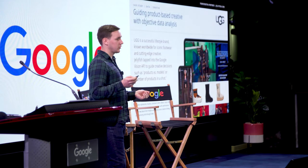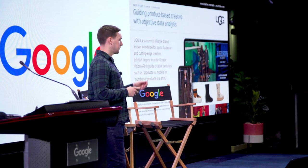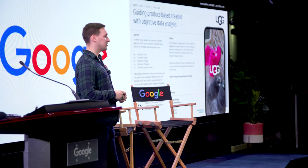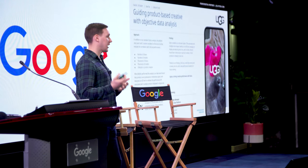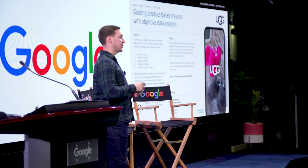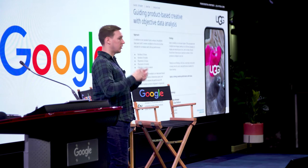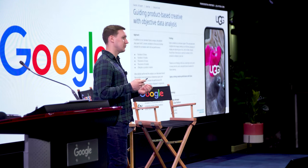We wrapped all of this up in a case study. The initial goal was guiding product-based creative with object data analysis. We obviously looked at more than just the number of shoes. In addition to all of the base features from the Vision API, we built our own features — accounting for the number of models in the shot, and where the shoes are. You can break down an image into a tic-tac-toe board and see where different products show up — like along a wide banner ad or a tall skinny ad — and where your products should fit. It can be different for every brand.